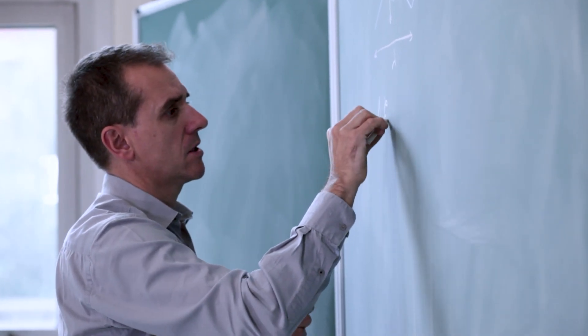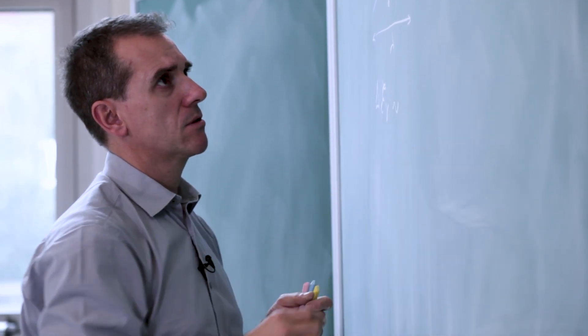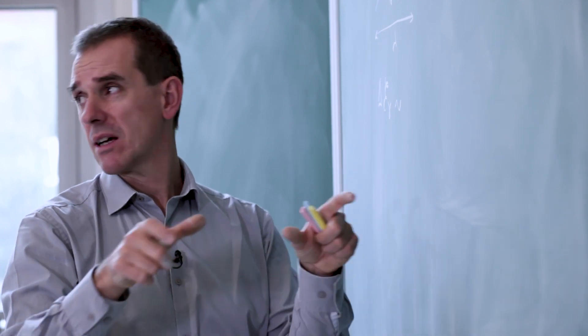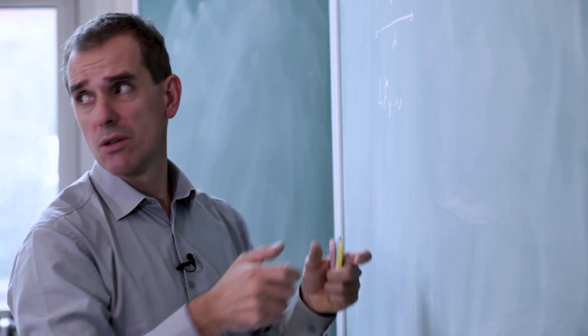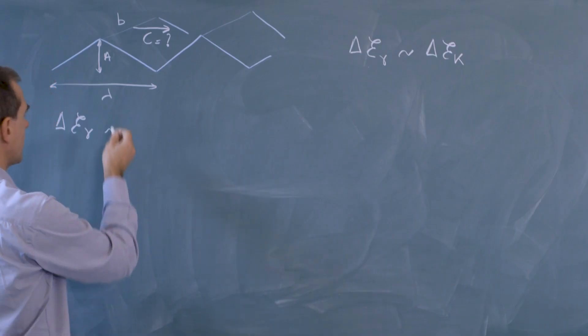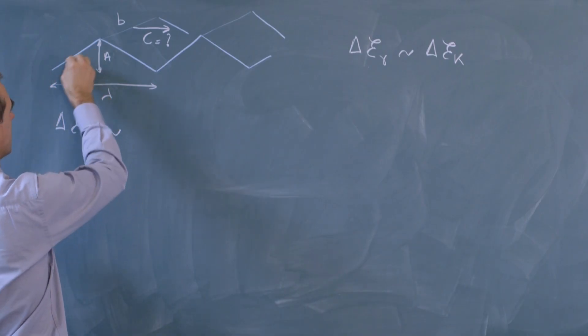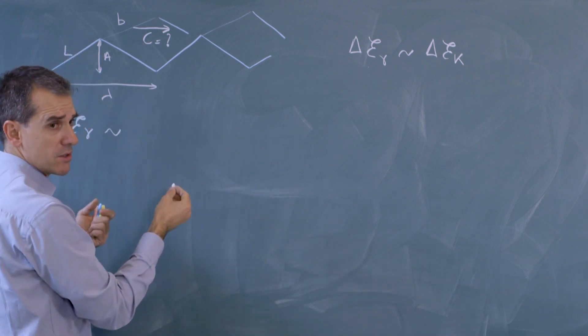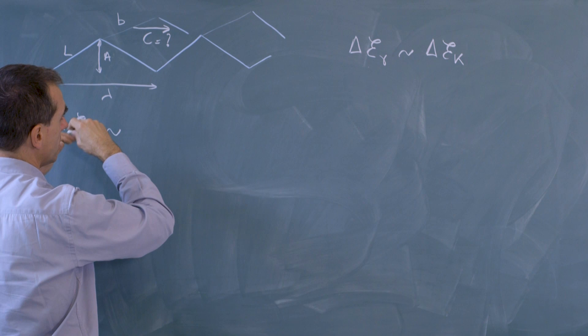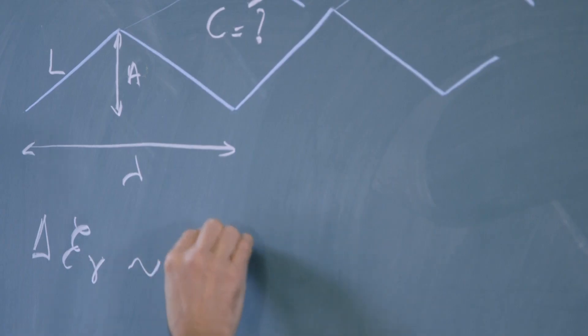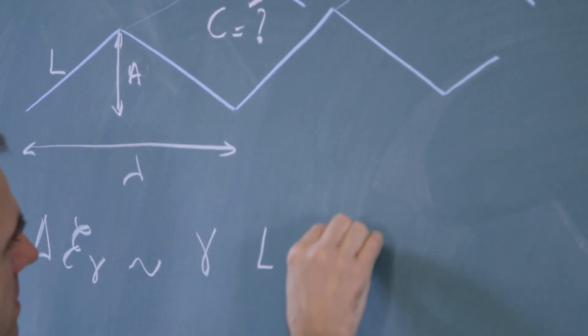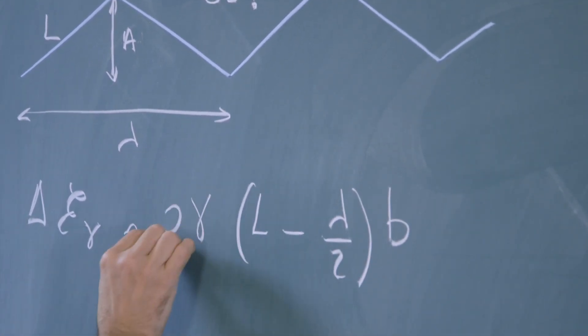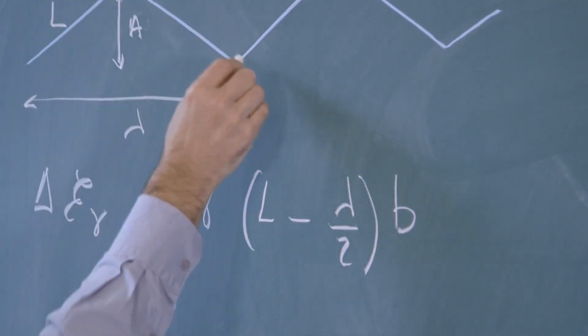So this potential energy is related to the fact that when we perturb the surface, there is more interface than at rest. And so we store some energy into the surface deformation. If we look at the sawtooth configuration, and we call this length l, then the excess of surface compared to the horizontal state goes like l minus lambda over 2 times the transverse direction b. And we have a factor of 2 because we have two sides here.